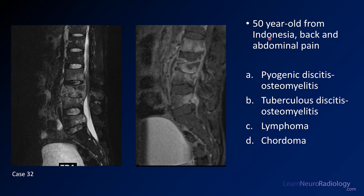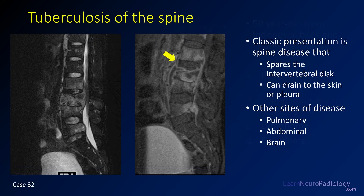Maybe it's a clue that the patient is from a place with endemic tuberculosis. This is a case of tuberculous diskitis osteomyelitis. You see abnormal T2 signal involving several adjacent vertebral body segments, but with relative sparing of the disc spaces — the discs are not overtly destroyed. On the enhancing image, you have abnormal enhancement with relative disc sparing, a little fluid anterior to the vertebral bodies, and some epidural enhancement. If you see someone with TB risk factors and infection sparing the disc spaces, think tuberculous disease and look for other sites such as the abdomen and brain.